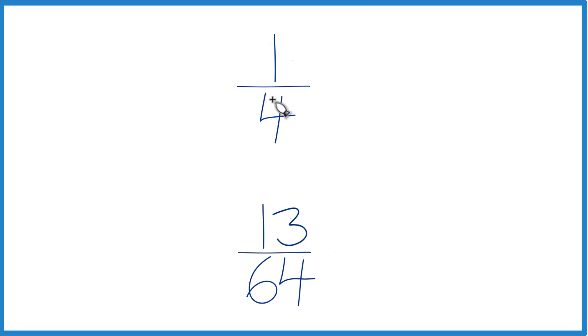The other way, we could find a common denominator. Right now we have 4 and 64. But if we had the same denominator, then we could just compare the numerators. So let's do that.